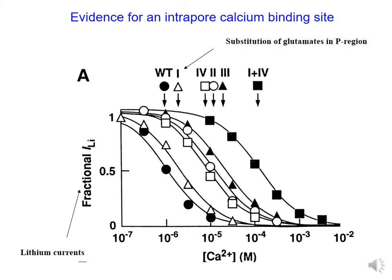The evidence for the glutamates in the pore region of calcium channels serving as binding sites comes from site-directed mutagenesis studies. The prediction is that mutating the glutamates in the P-region to another amino acid, such as the neutral amino acid glutamine, should decrease the affinity for calcium. This is assessed by measuring the effects of glutamate mutations on lithium currents through calcium channels. Lithium behaves exactly like sodium, so it permeates calcium channels when extracellular calcium is very low. It can be seen that in the wild-type channel, the lithium current decreases when extracellular calcium is increased from 10⁻⁷ to 10⁻⁴ M. This decrease or blockade of currents reflects binding of calcium to one of the binding sites in the P-loop.